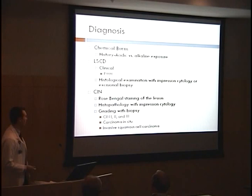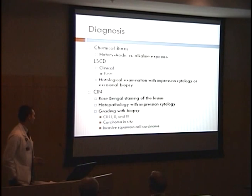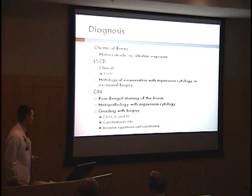For CIN initially, you can use rose bengal staining, which reveals punctate lesions. Histopathology can also be done with impression cytology, and you'll normally see dysplasia with unusually thickened epithelial cells. If you do see it, you can grade it with a biopsy. CIN1 is dysplasia in the lower third of conjunctival epithelial thickness; CIN2 is in the middle third; CIN3 is in the upper third. CIN3 is a full-thickness lesion, and then invasive squamous cell carcinoma breaches the basement membrane.